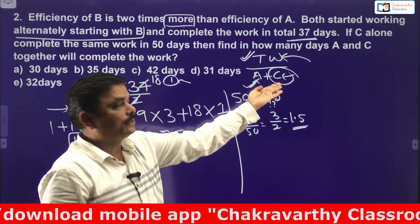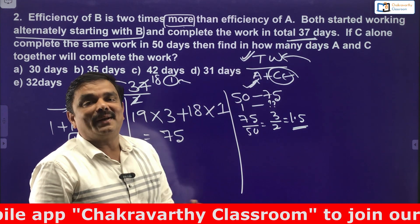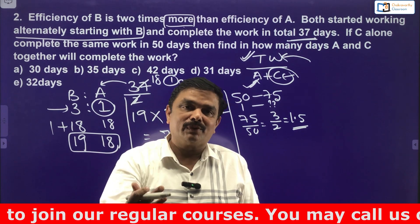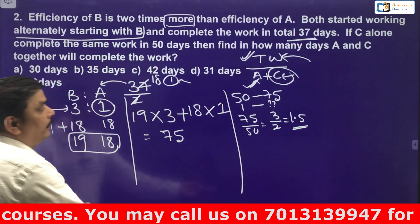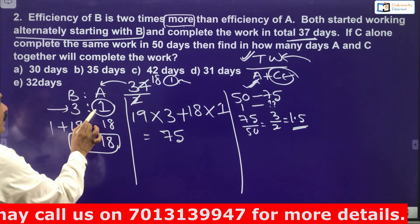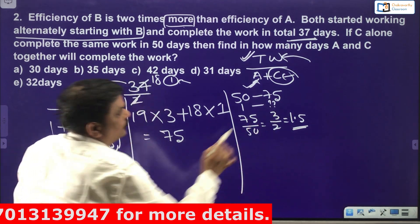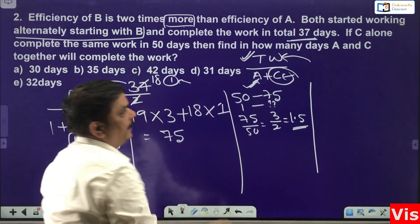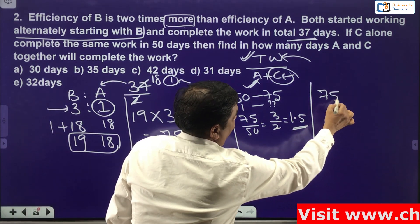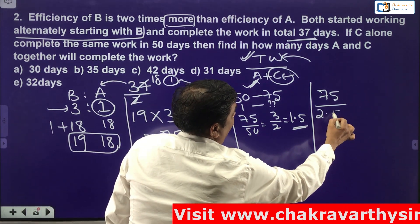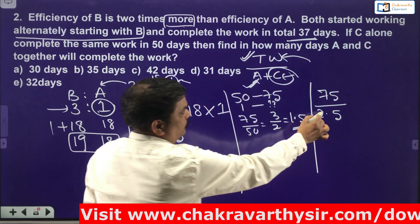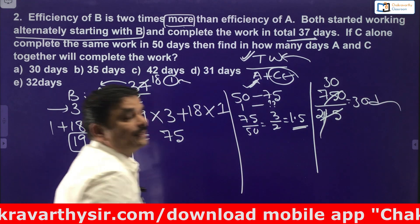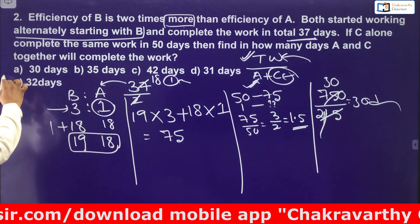Now we have everything we need. A's efficiency is 1 unit per day and C's efficiency is 1.5 units per day — a combined efficiency of 2.5 units per day. Time for A and C together = total work divided by combined efficiency = 75 divided by 2.5. Simplifying, this gives 30 days. The answer is 30 days, which is Option A.